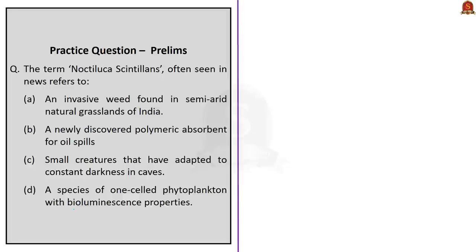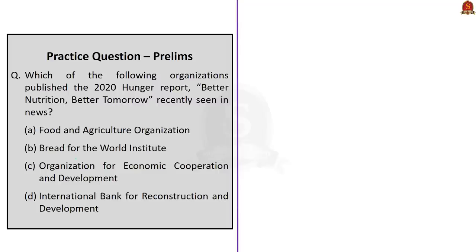The next question: the term 'Noctiluca scintillans' often seen in news refers to — a species of one-celled phytoplankton with bioluminescence properties. The correct answer is option D. The following question asks which organization published the 2020 Hunger Report 'Better Nutrition, Better Tomorrow' recently seen in news. The correct answer is option B, Bread for the World Institute.